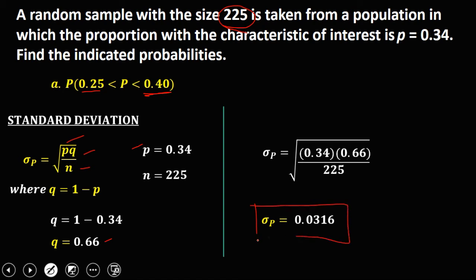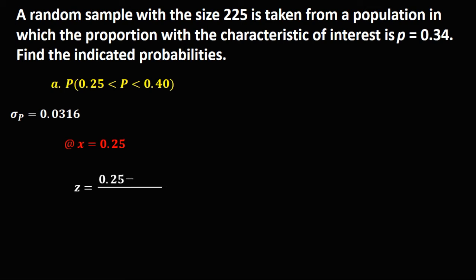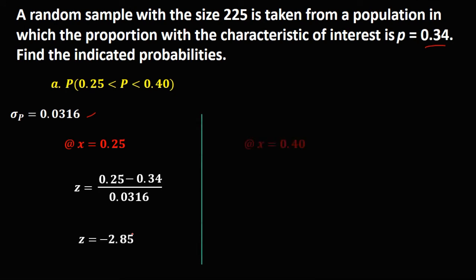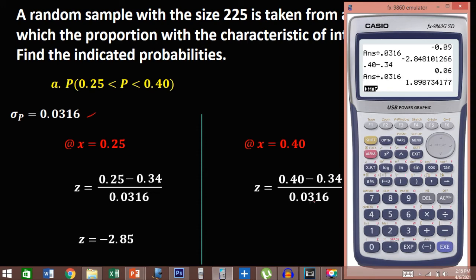The standard deviation is 0.0316. Converting to z-scores: at x = 0.25, Z = (0.25 minus 0.34) divided by 0.0316 = negative 2.85. At x = 0.40, Z = (0.40 minus 0.34) divided by 0.0316 = 1.90.